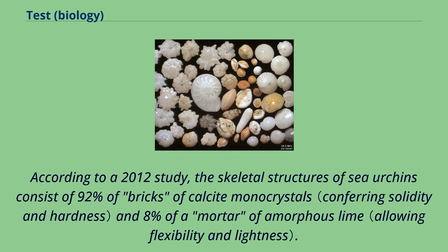According to a 2012 study, the skeletal structures of sea urchins consist of 92% bricks of calcite monocrystals and 8% of a mortar of amorphous lime.